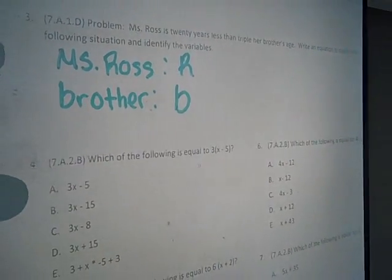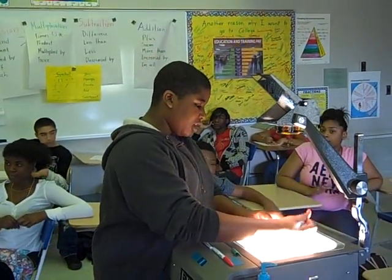And so the question is Ms. Ross is, so we know R, then we have the equals sign.